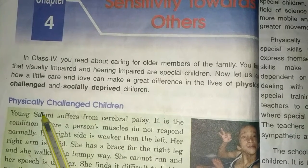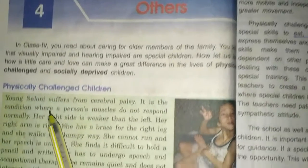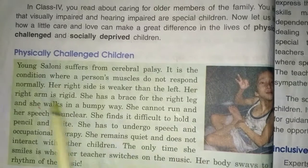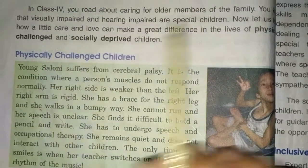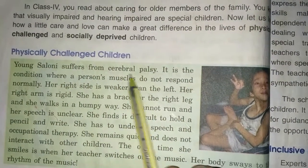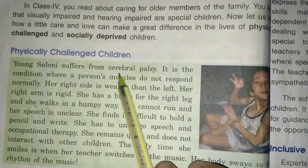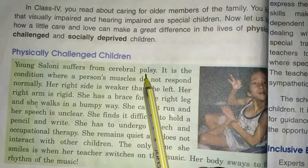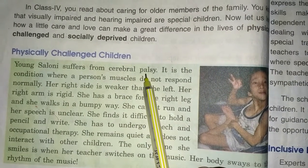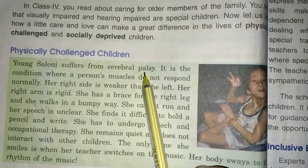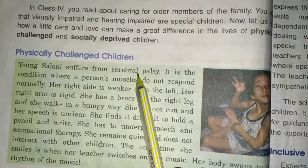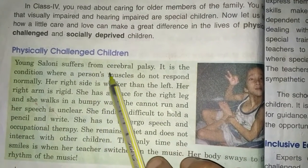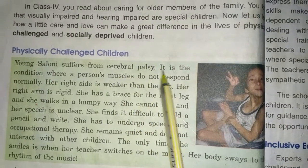We can start with physically challenged children. Here is a case study of a girl named Saloni. She is suffering from cerebral palsy — it is a kind of disease in which a person's body cannot move properly and cannot respond properly. Young Saloni suffers from cerebral palsy, which is a condition where a person's muscles do not respond.